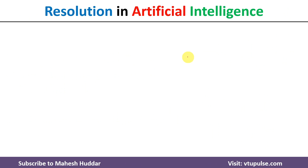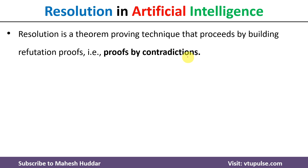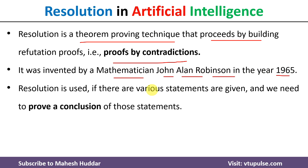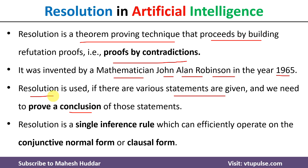First, we will understand what is resolution in artificial intelligence. Resolution is a theorem proving technique that proceeds by building proof by contradiction. That is, we will consider the contradiction of the required proof and then start building the proof. It was invented by mathematician John Allen Robinson in 1965. Whenever we have various statements and want to prove a conclusion, we can use a resolution technique. Resolution is a single inference rule which can efficiently operate on conjunctive normal form, also known as CNF.